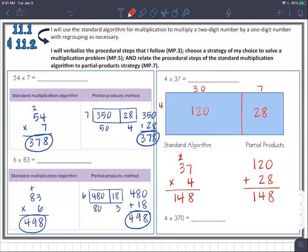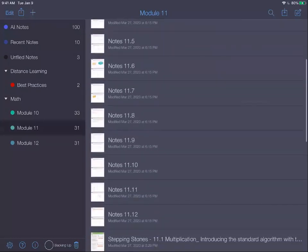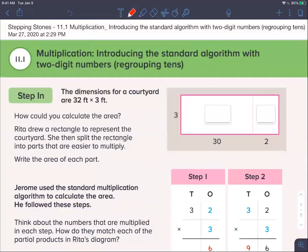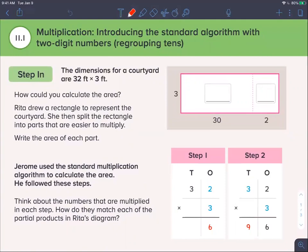Now, give me a minute. I'm going to have us take a look at stepping stones. So let's take a look at 11.1. Very similar to our notes. You can fill this in. They're giving you a word problem. The dimensions for a courtyard are 32 feet times 3 feet. How could you calculate the area? They've already drawn a diagram here for partial products: 3, and then they have already expanded 32 into 30 plus 2. So 3 times 30 is 90, and 3 times 2 is 6. If we were going to add the partial products off to the side, 90 plus 6 is 96. Then they're showing you step 1 and step 2 of the traditional algorithm. Their final answer matches our partial product.